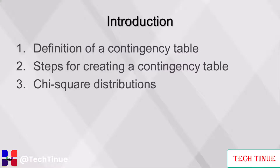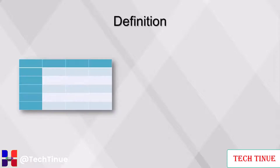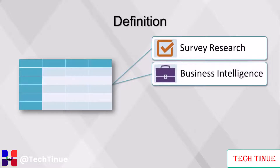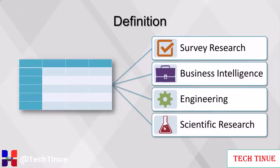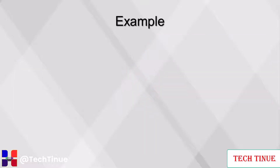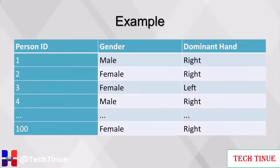This video will cover contingency tables — first a definition, then the steps for creating one, and finally chi-square distributions. In statistics, a contingency table is a type of table in a matrix format that displays the multivariate frequency distribution of variables. Contingency tables are heavily used in survey research, business intelligence, engineering, and scientific research. They provide a basic picture of the interrelation between two or more variables and can help find interactions. A contingency table is also referred to as a two-way frequency table. Given this example table, can you calculate: the number of males who are right-handed, the percent of males who are left-handed, whether more males are left-handed than females, or the percent of left-handed people who are females?